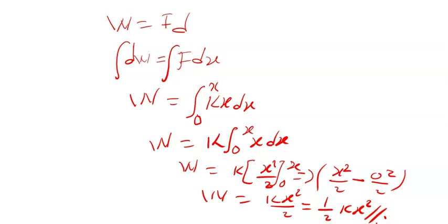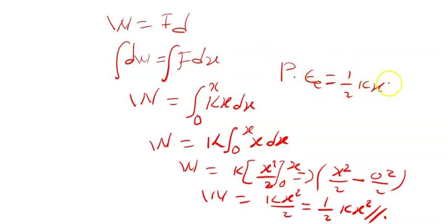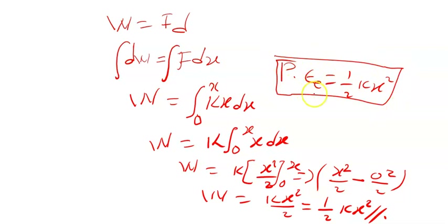The work done by the spring is nothing different from the energy the spring stores. The elastic potential energy is given by ½kx². The energy stored in the spring is called the elastic potential energy, which equals the work done in extending or compressing it. See you in the next video, where we'll answer a series of questions under Hooke's Law. Thank you for your time.